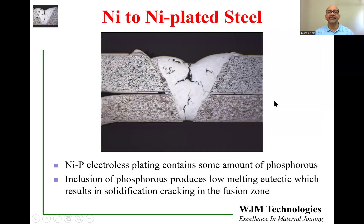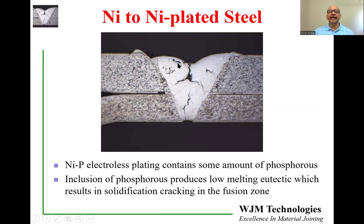Another example is nickel plating on steels. There are two types: electroplating and electroless plating. Electroless plating produces a coating that contains phosphorus, which acts similarly to sulfur — it produces a low-melting eutectic that causes cracks. In this cross-section, you can see a laser weld between two sheets of steel. The steel on top has nickel plating on both sides; that plating gets consumed into the weld, and the phosphorus from the nickel plating then results in cracking.